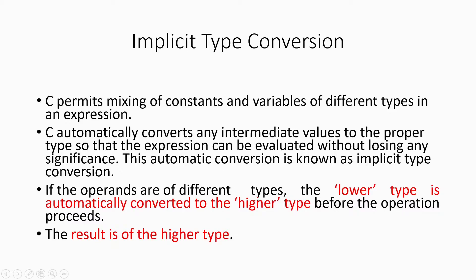So the basic rule in implicit type conversion is: the lower data type is automatically converted to the higher data type before evaluating an expression or performing an operation, whether addition or multiplication. Before the operation, the data type is converted automatically — that is why it is called implicit type conversion. The result will also be of the higher type. For example, when we multiply an int with a float, the result is float.